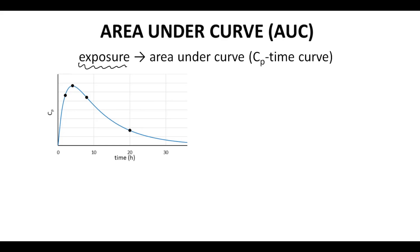It is possible to use curve fitting and calculus to determine AUC. In practice, however, AUC for a CP time curve is estimated through something called the trapezoid approximation method.